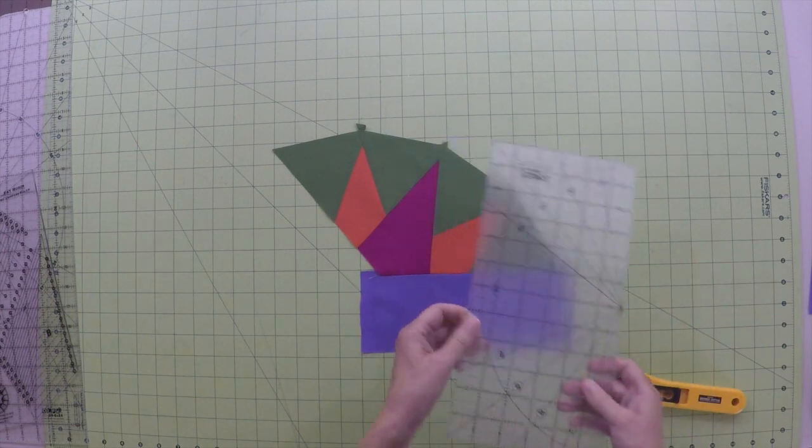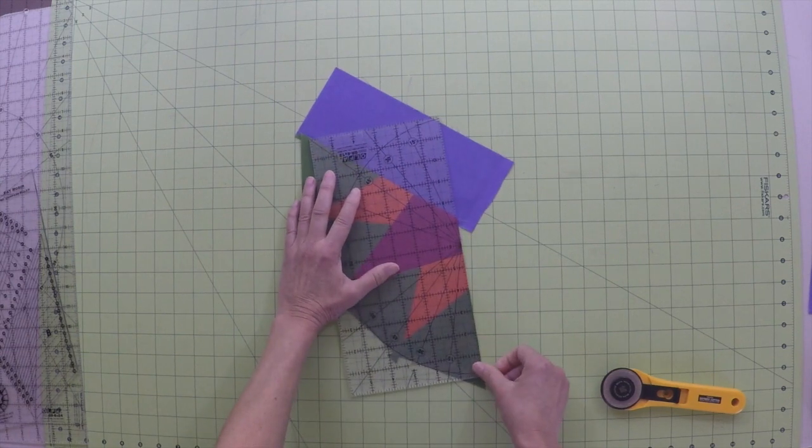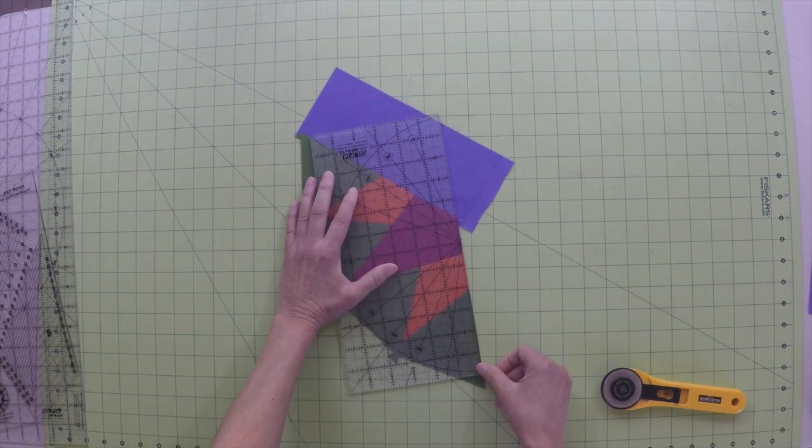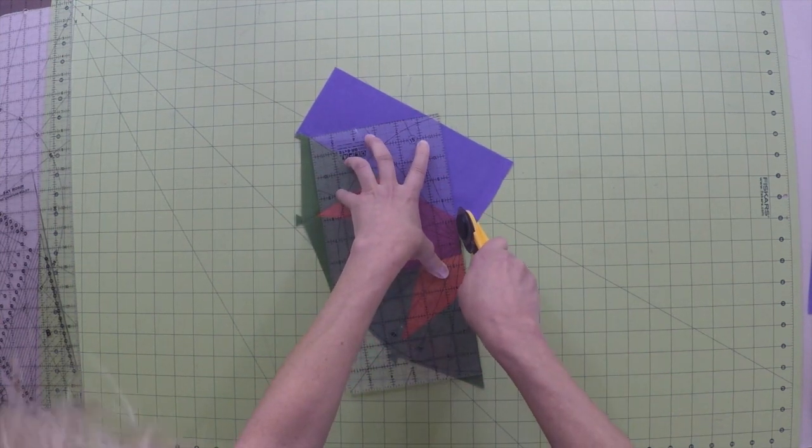I don't show this next part in the book, but turn the unit around and trim the other side of point 3 flush with big pie. Only do this for making quarter compasses as it will help when you sew on the next strip.